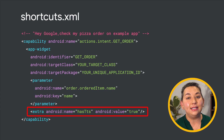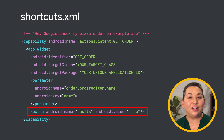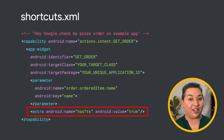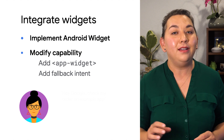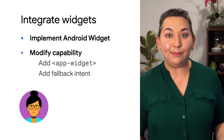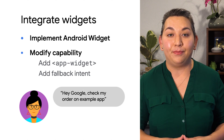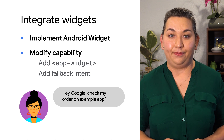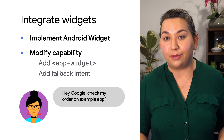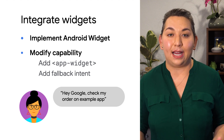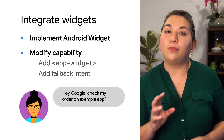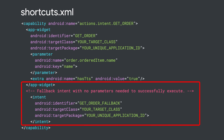By setting Has TTS to true, it lets Assistant know that the widget will have text to read using the text-to-speech function, displaying it on the screen. There are many times when the user might not provide the value of the parameter — for example, saying hey Google, check my order on example app. So we'll need to include a fallback intent. A fallback intent requires no parameters; think of it as the else in a conditional statement. Fallbacks are needed whenever you have a parameter in your app widget. Here's an example of a fallback intent for this capability — it only contains information on constructing your Android intent.